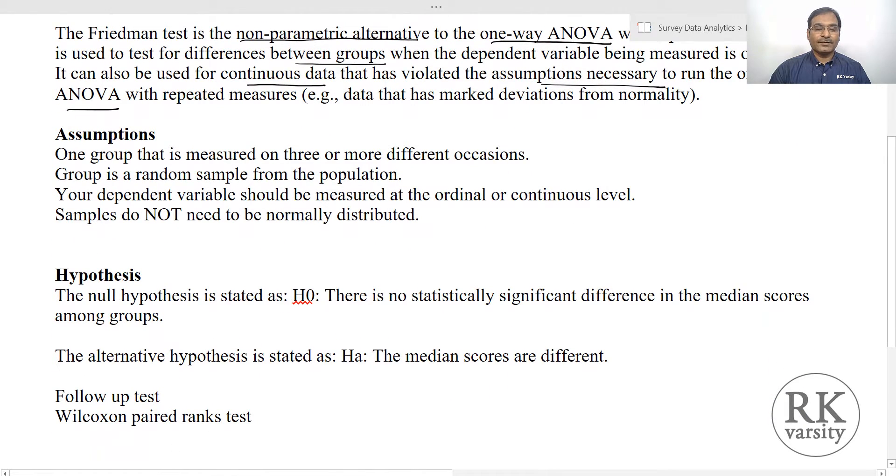In case of Friedman's test for K-related samples, the assumptions that we make are that one group is measured on three or more different occasions, the group is a random sample from the population, your dependent variable should be measured at the ordinal or continuous level, and samples do not need to be normally distributed. If samples are normally distributed, then you can go for ANOVA. If they are not normally distributed, then you can run a Friedman's test.